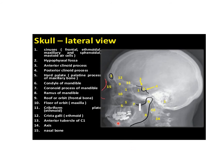This is the skull x-ray lateral view. Here you can see the paranasal sinuses: the frontal sinus, then the ethmoid sinus, then the maxillary sinus and the sphenoid sinus. Then here you can see the hypophysial fossa, the anterior clinoid process and the posterior clinoid process. In the hypophysial fossa you get the pituitary, and the inferior relation of the hypophysial fossa is the sphenoid sinus.